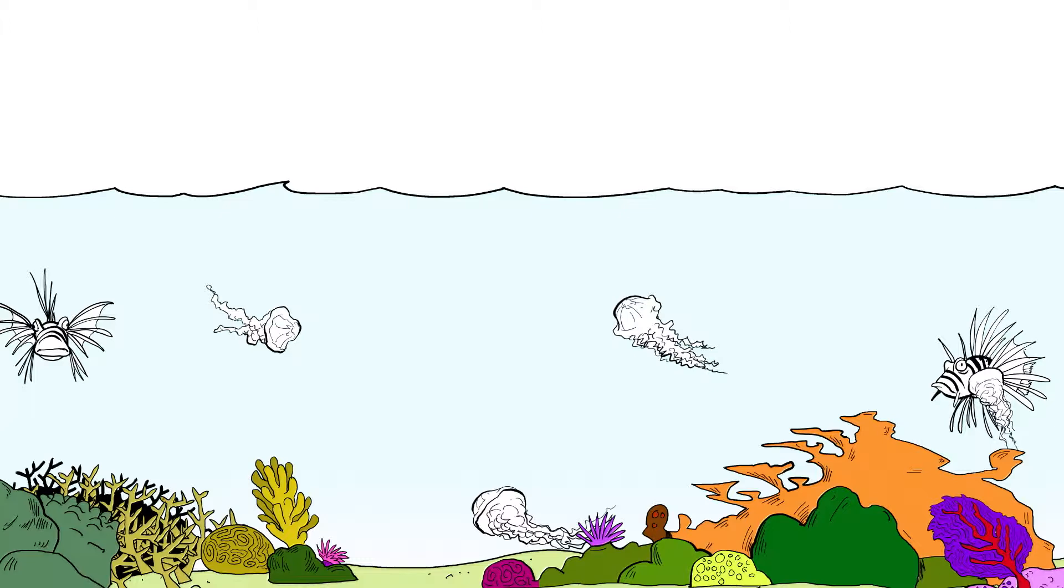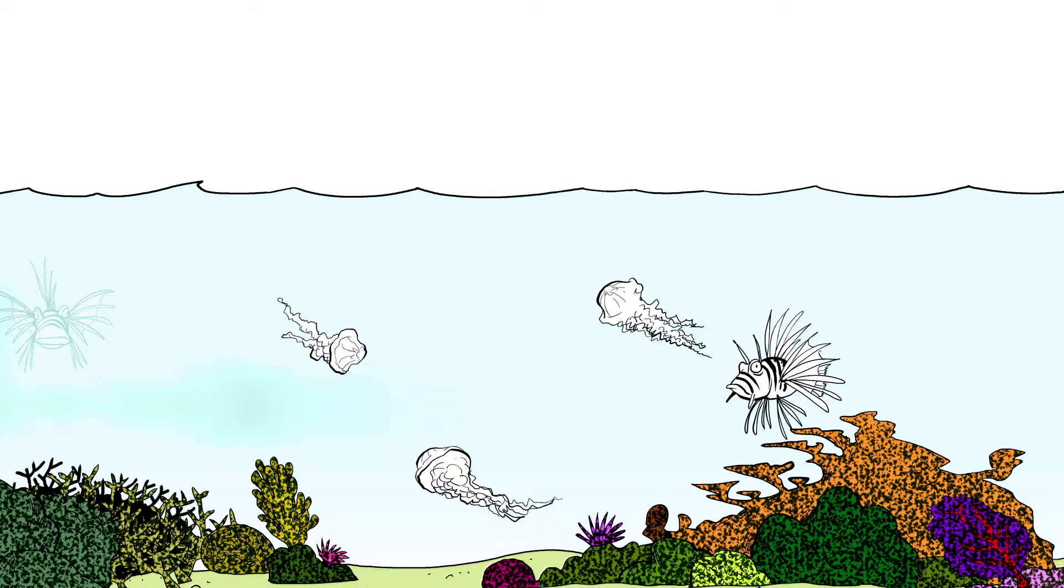Certain species flourish at the expense of other species. With the removal of plant-eating fish, algae grow rampant and smother the coral.